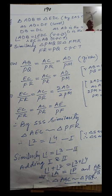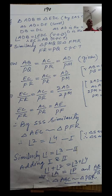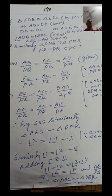Triangle ADB is congruent to triangle EDC by SAS. Because AD = DE by construction, BD = DC because D is the midpoint (AD is the median), and angle ADB = angle EDC as vertically opposite angles.